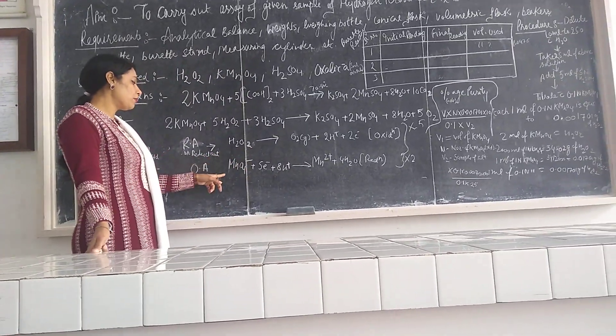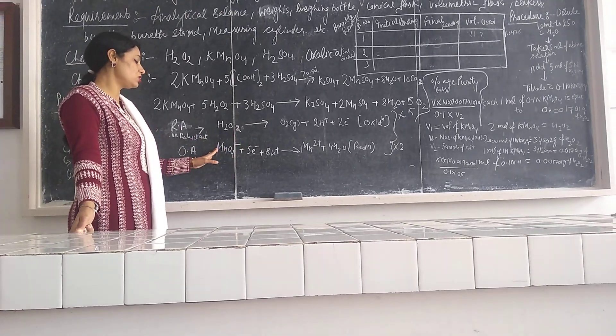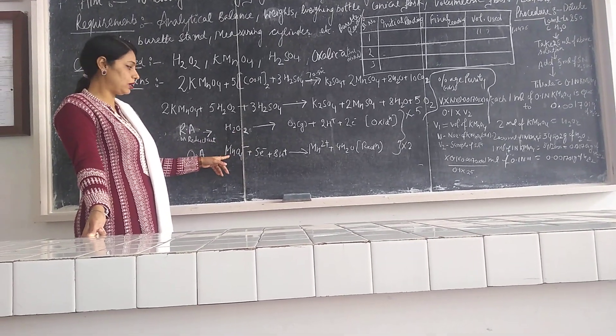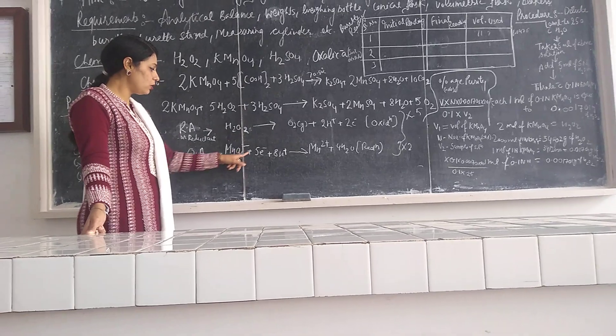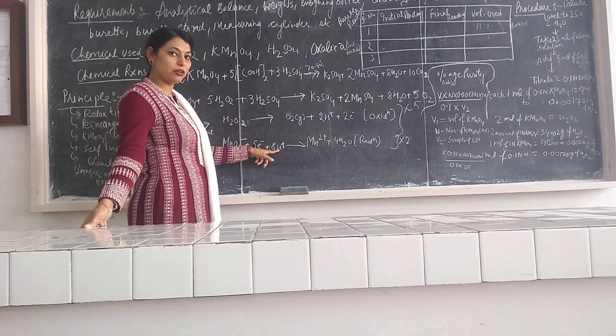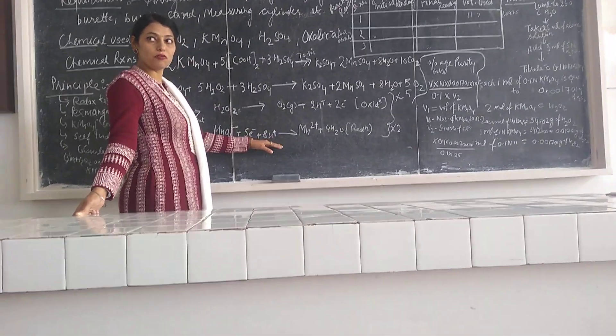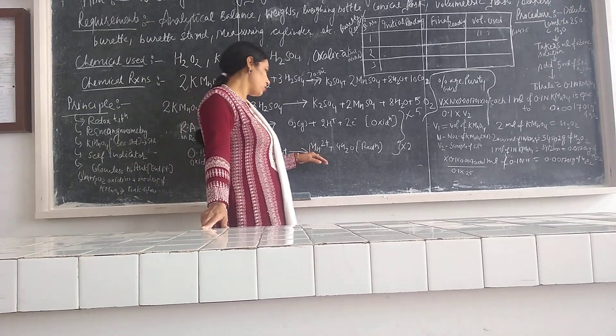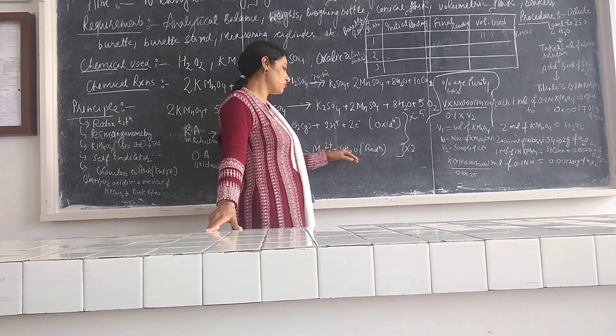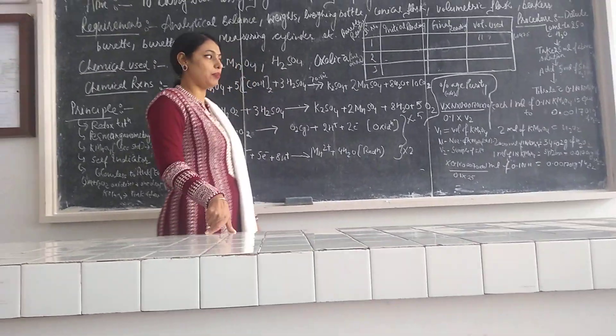So here KMnO4 will dissociate into K+ and MnO4-. So these are your permanganate ions. They will gain 5 electrons plus there is a gain of 8 hydrogen ions. In the case of reduction as we know there is a gain of hydrogen also. It will lead to the formation of Mn2+ plus 4 moles of water. So here reduction is happening.